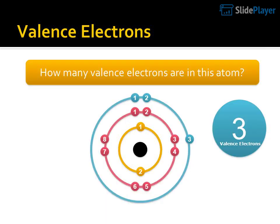How many valence electrons are in this atom? The electron configuration is 2, 3, 1. Valence electrons? 1.